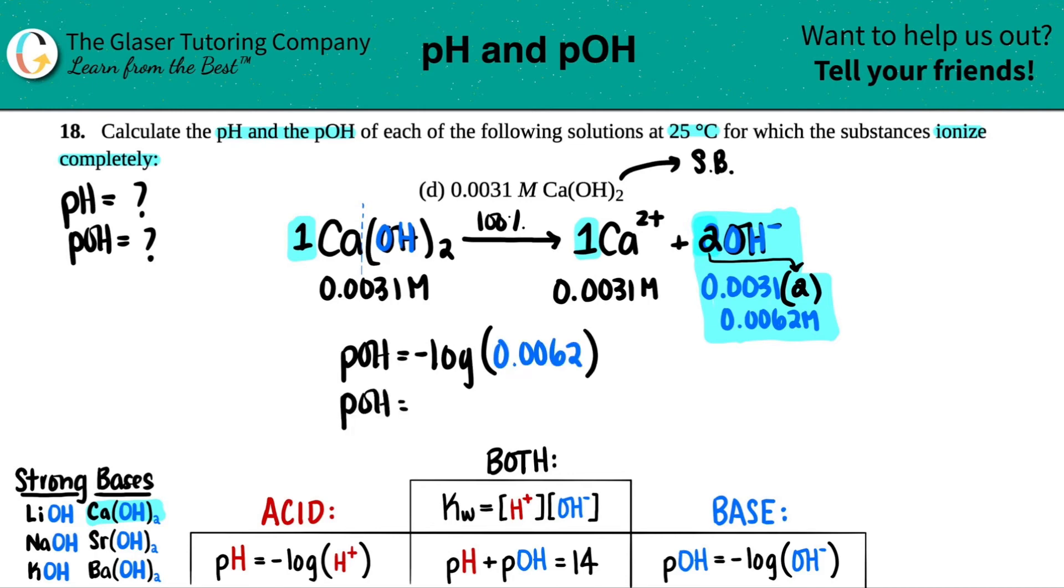So negative log of 0.0062. Now pOH and pH sig figs are a little weird. Basically, the total amount of sig figs here is going to be the sig figs after the decimal. So since there's two total, you have to have two after the decimal for the pOH. So it'd be 2.21, two after the decimal, because there's a total of two here. And now that's one of my answers. So I found the pOH. Check.